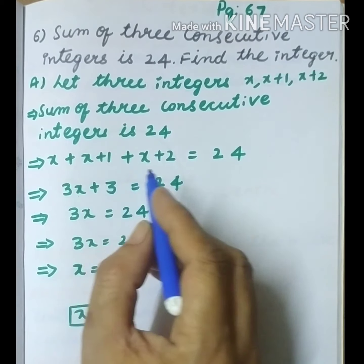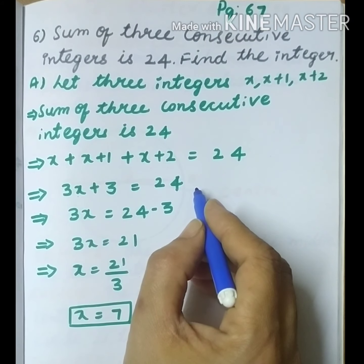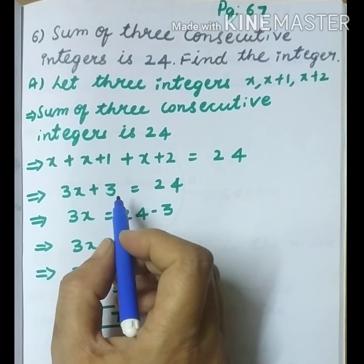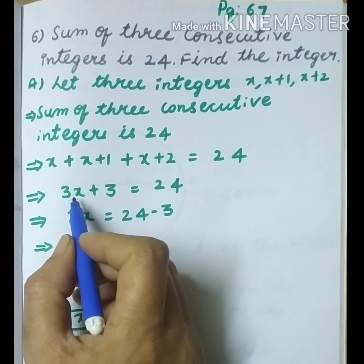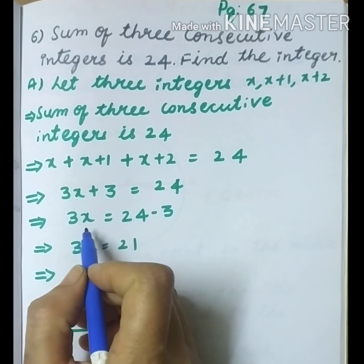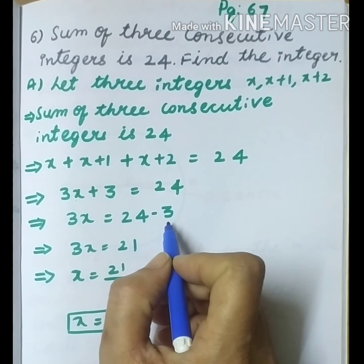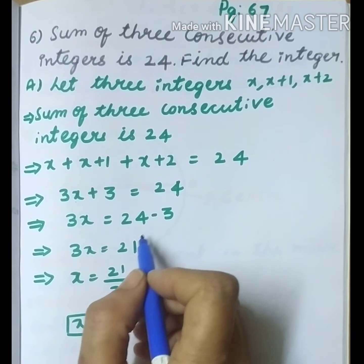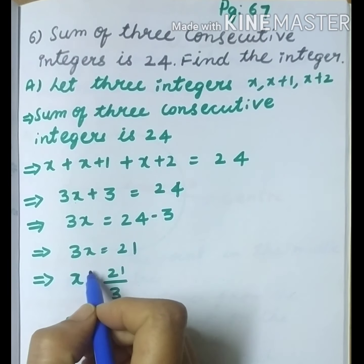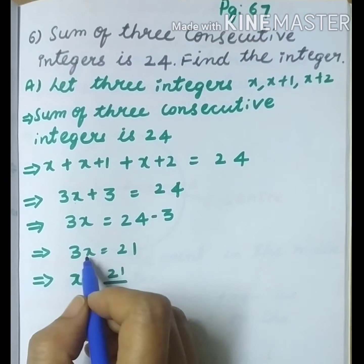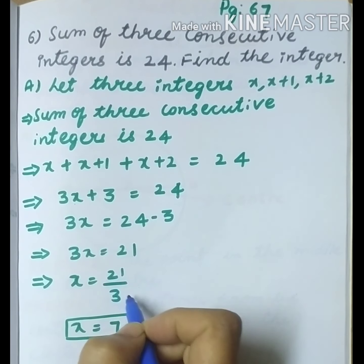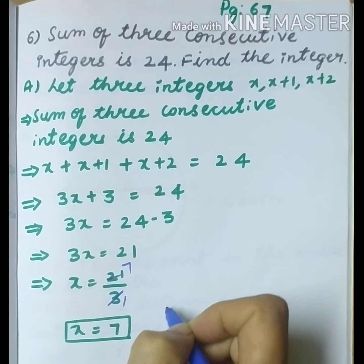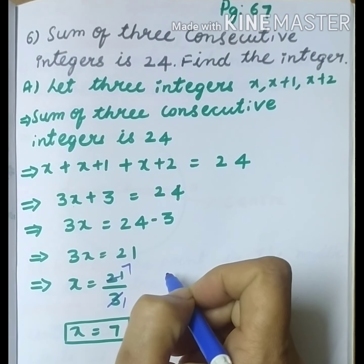Now 3x equals 24 minus 3, because we transpose the plus 3 to this side, giving us minus 3. We have to find the x value. So 3x equals 24 minus 3, which means 3x equals 21. Therefore x equals 21 by 3, and since 3 sevens are 21, we get x equal to 7.